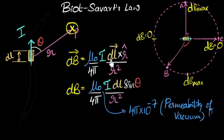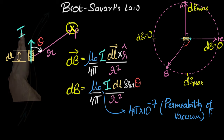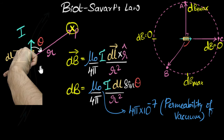But we have a vector equation, so we should get the same answer from it. To get the direction of dB, we need the direction of dL × r̂. I look at dL pointing this way, r pointing this way, and do the cross product using my right hand — aligning my four fingers along dL and curling toward r̂. The thumb gives the direction of the cross product. The thumb points inward, so the magnetic field here must be inward. Both methods give the same answer.